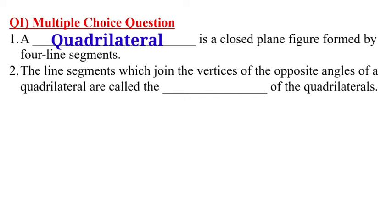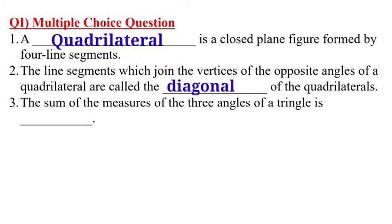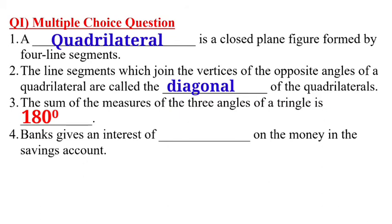The sum of the measures of the three angles of a triangle is dash. As we know that in a triangle there are three angles, the sum of the three angles is 180 degrees. Don't forget to put the degree sign. The fourth one is given: banks give an interest of dash on the money in the saving account. Banks give us 4% to 6% interest on our money which is kept in the saving account.